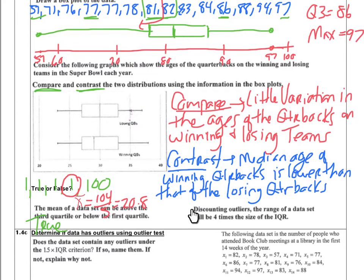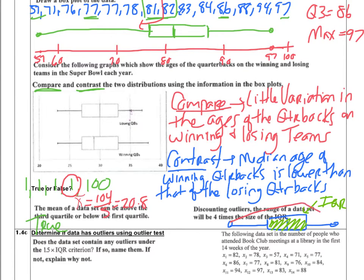Second true/false: discounting outliers, the range of a data set will be four times the size of the IQR. Sketch a quick box plot to visualize. The IQR sits between Q1 and Q3, representing the middle 50% of data. The range spans from minimum to maximum, representing 100% of the data. So the range is actually two times the IQR, not four times. This statement is false.